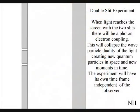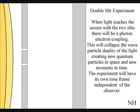The only way to see this happen directly with light is in the two-slit experiment. When the wave function reaches the screen with the two slits, the photon will react with the electrons of the screen. This will collapse the wave-particle duality of the light, creating new quantum particles in space and new moments in time.